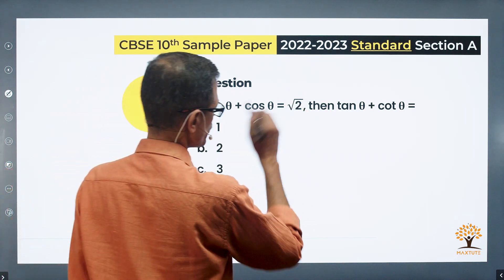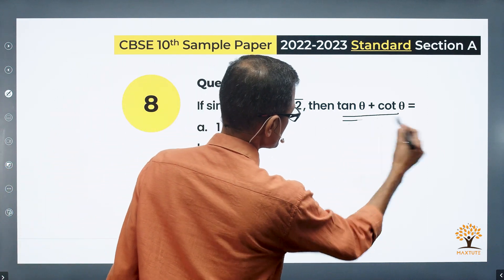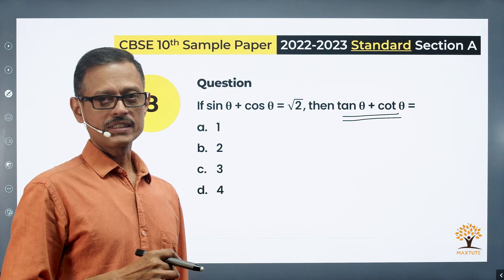Sin theta plus cos theta is equal to root 2. What we need to find out is the value of tan theta plus cot theta.